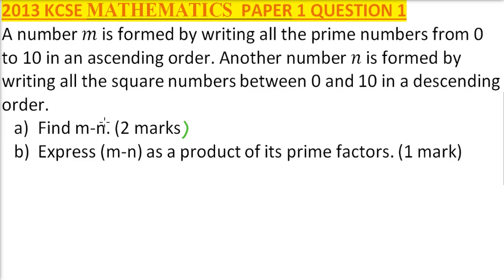So to do that, first of all we start with m. Our number m is, we are supposed to write the prime numbers in ascending order. So we have 2, then we have 3, we have 5, and finally we have 7.